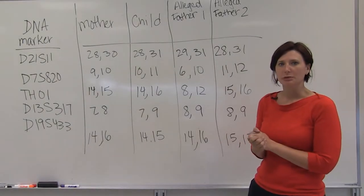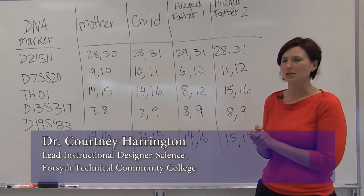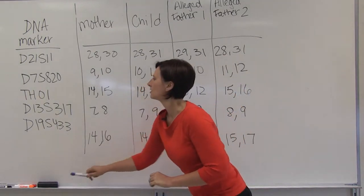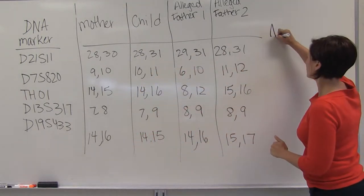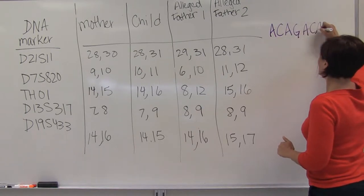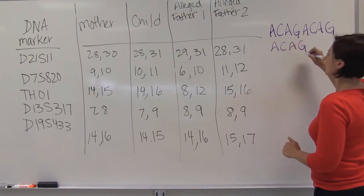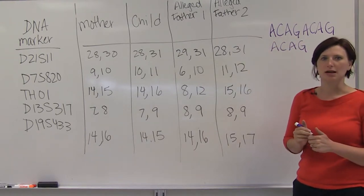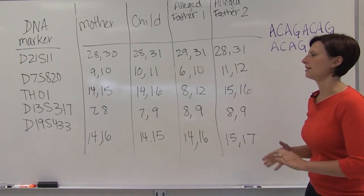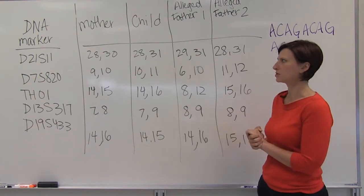DNA can also be used in paternity testing, and this utilizes short tandem repeat sections of the DNA where DNA repeats, for example, ACAG, ACAG, ACAG, and so on. The repeats at each loci are counted, and then that's used in a matrix to determine whether or not someone could be the father of a child.